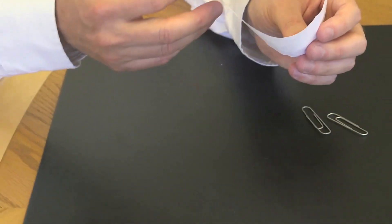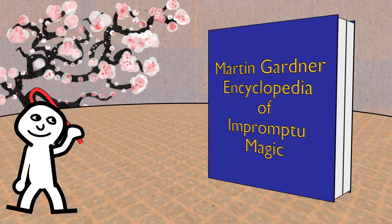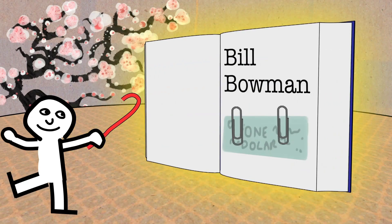According to Martin Gardner's Encyclopedia of Impromptu Magic, this seems to have been discovered by somebody called Bowman in Washington State. Today, we'll do some variations on this.